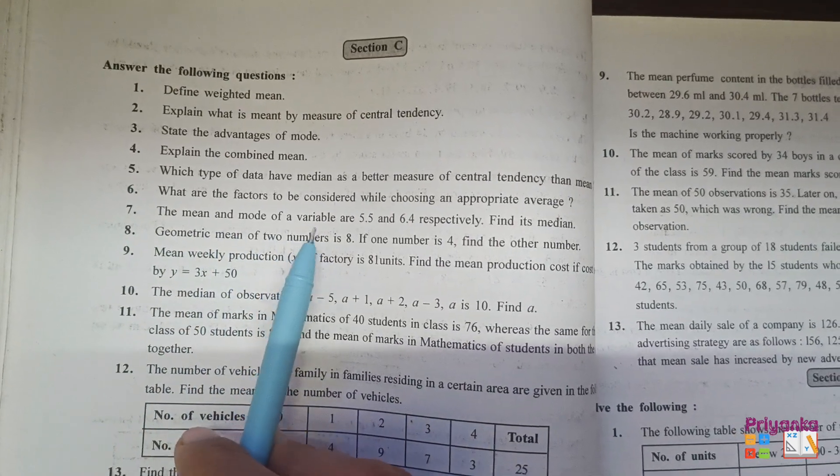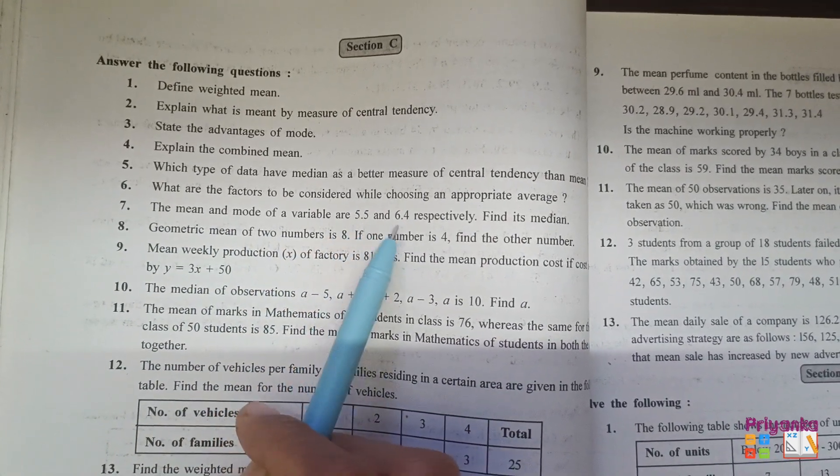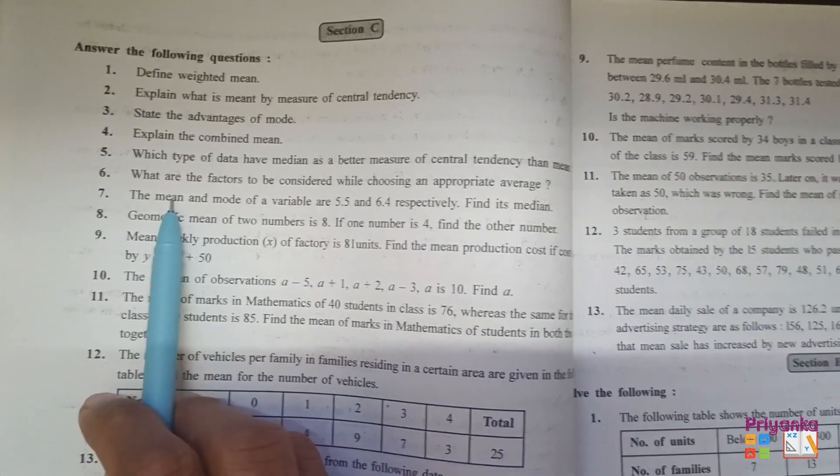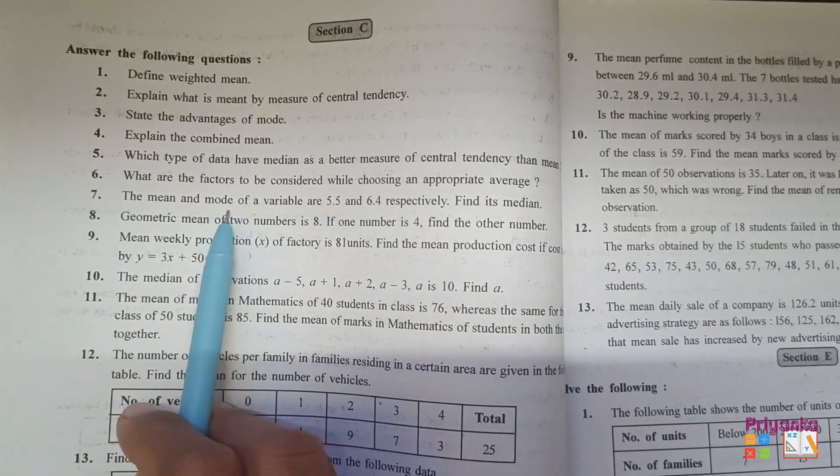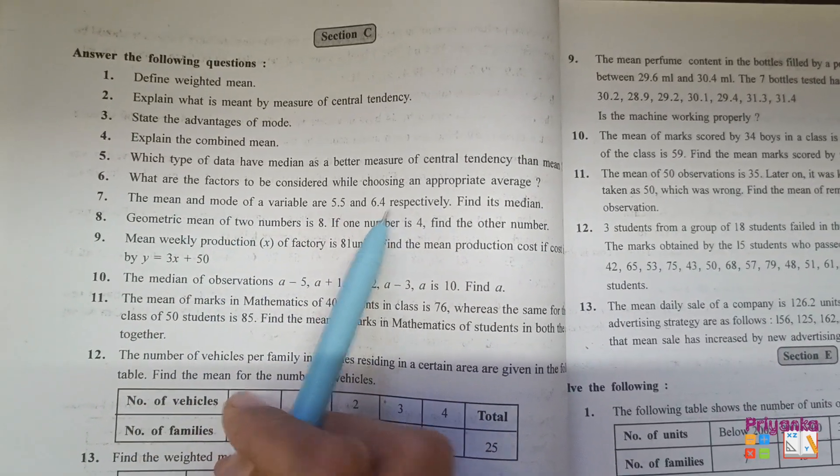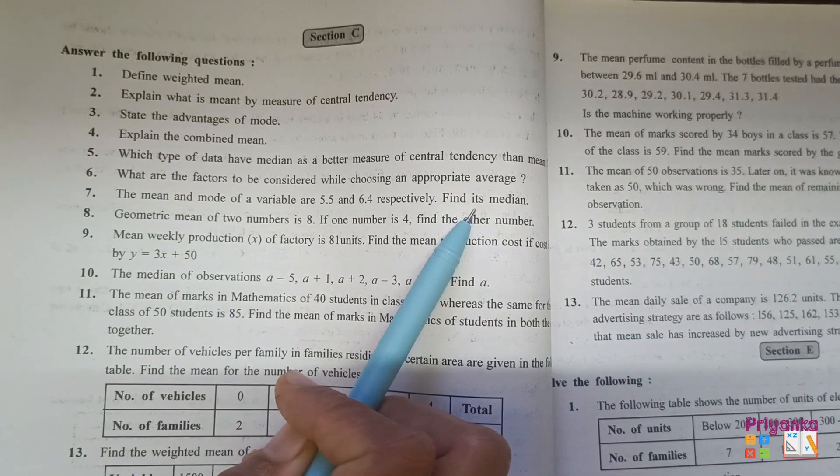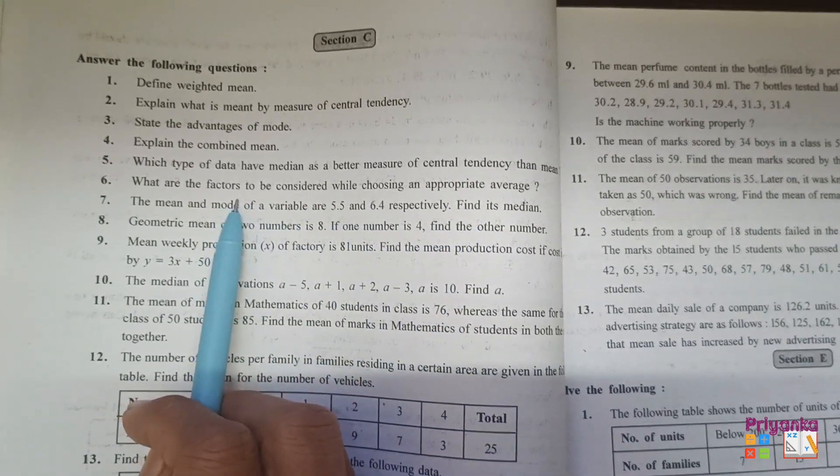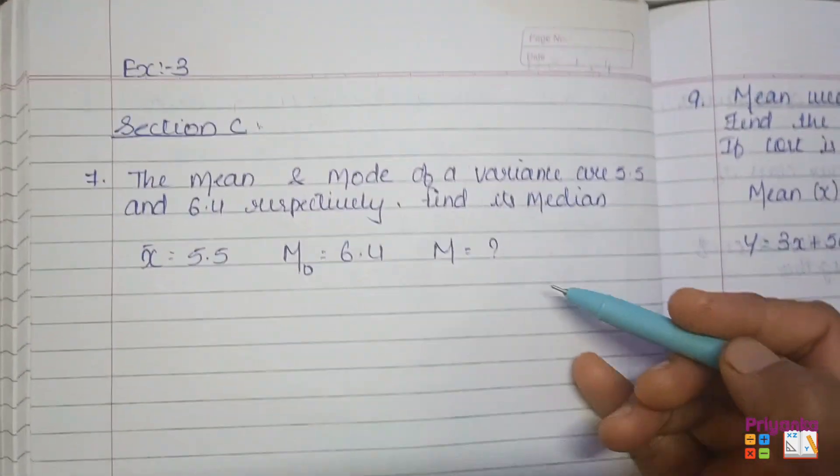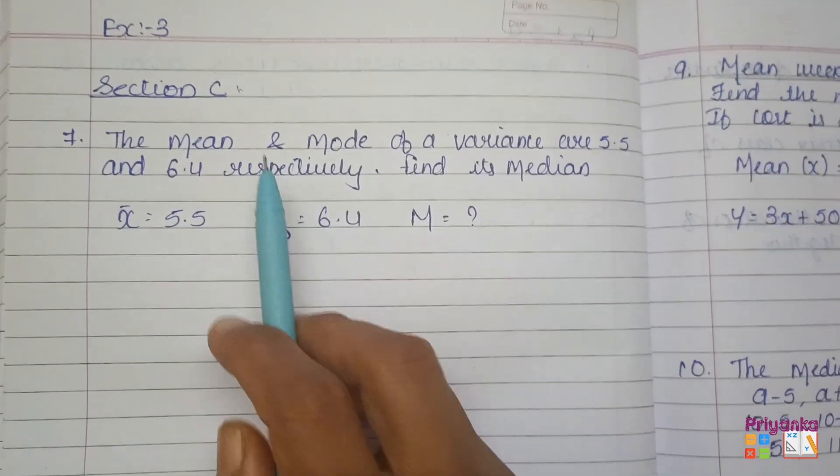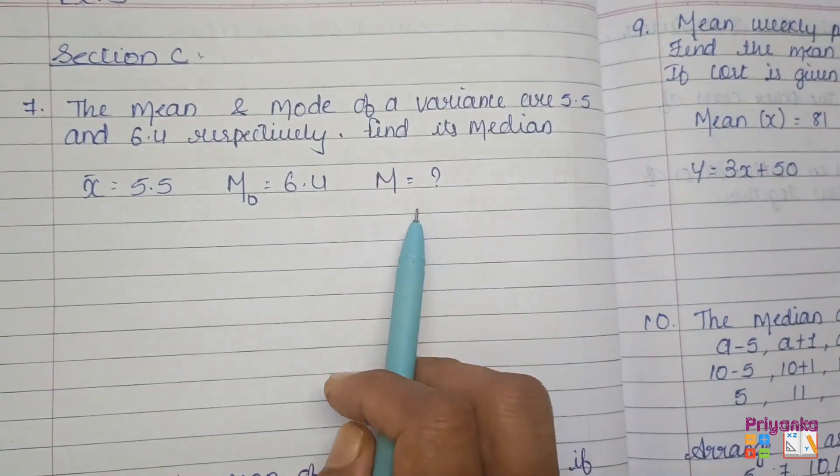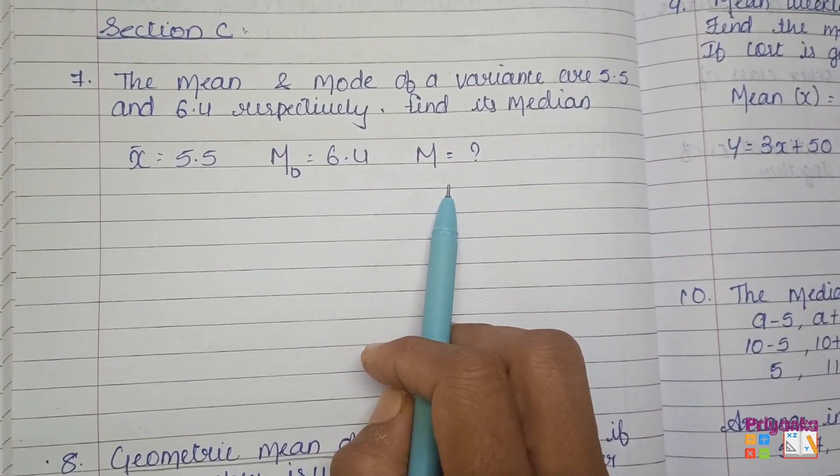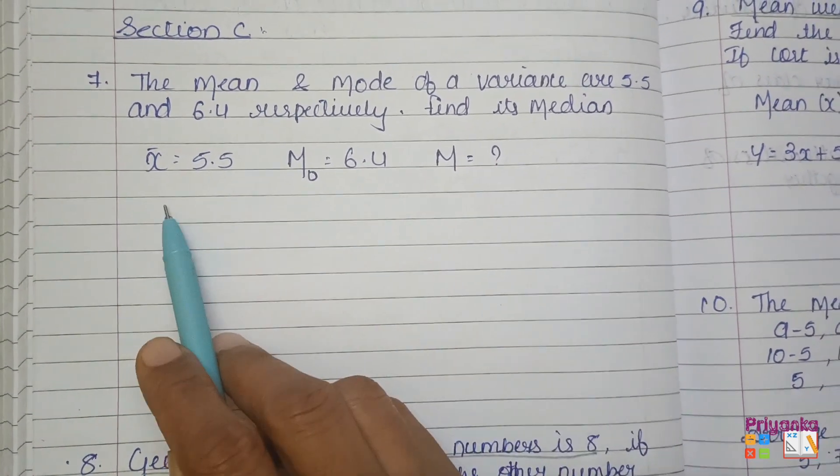The mean and the mode of a variance are 5.5 and 6.4. The mean is 5.5 and the mode is 6.4. They ask to find its median. First, take this question in your book. As you can see, the mean and mode are given and the question asks about median.